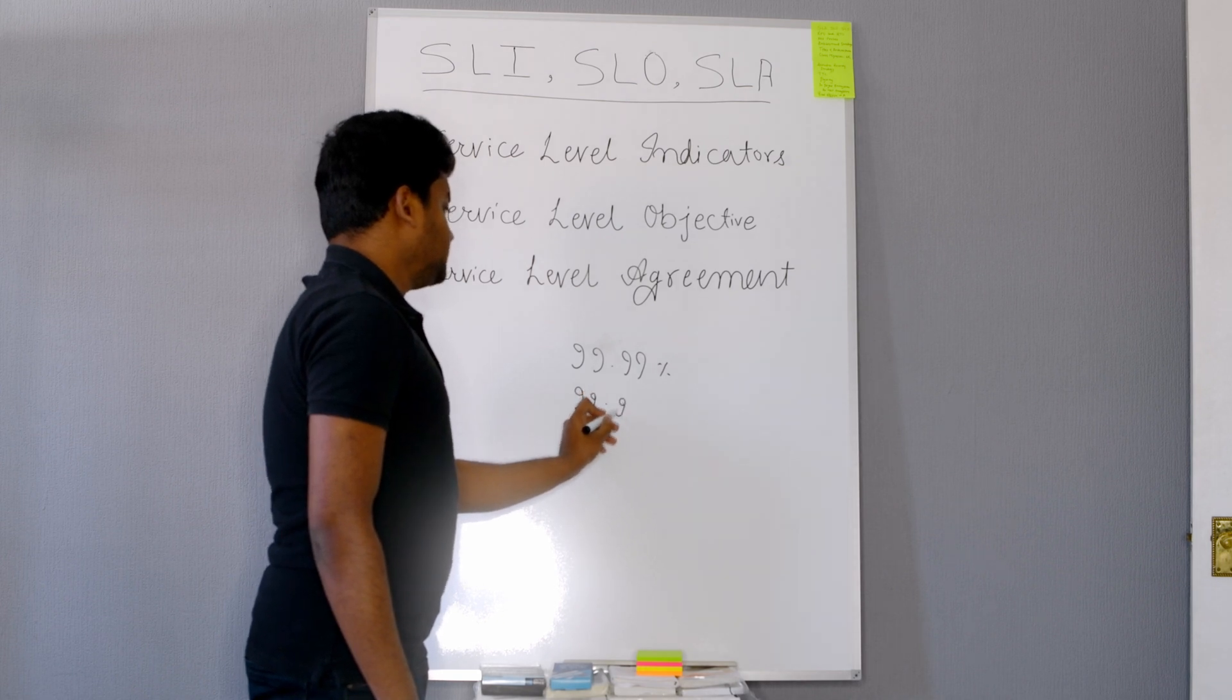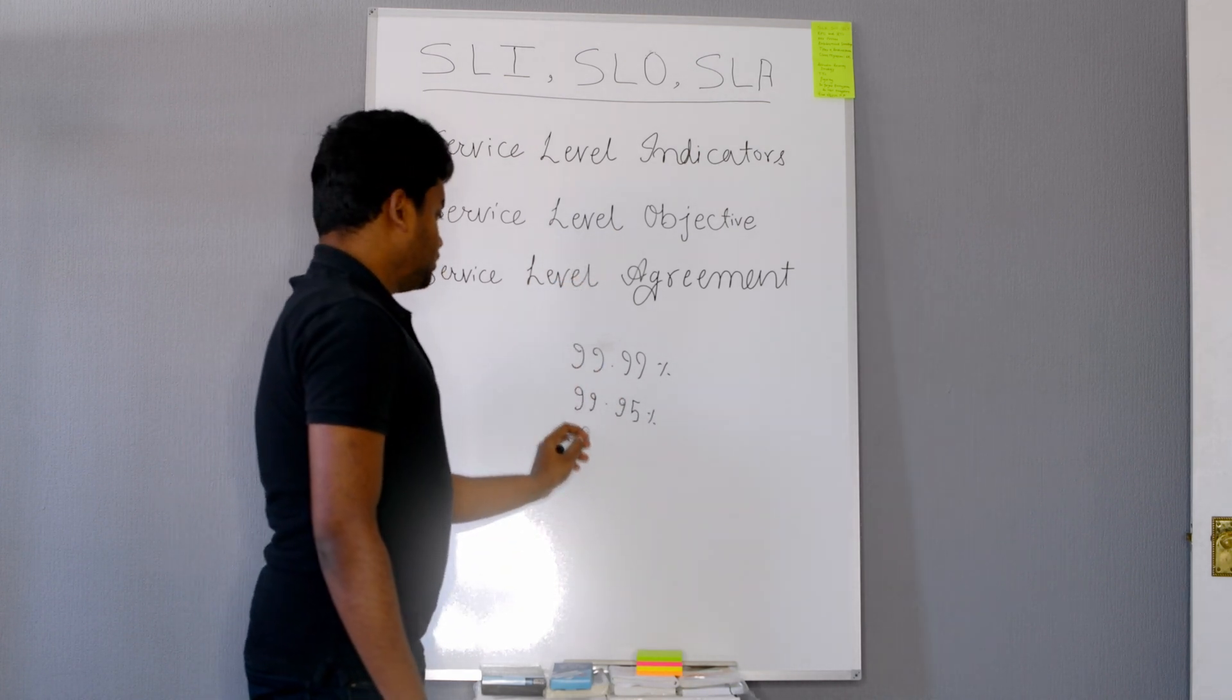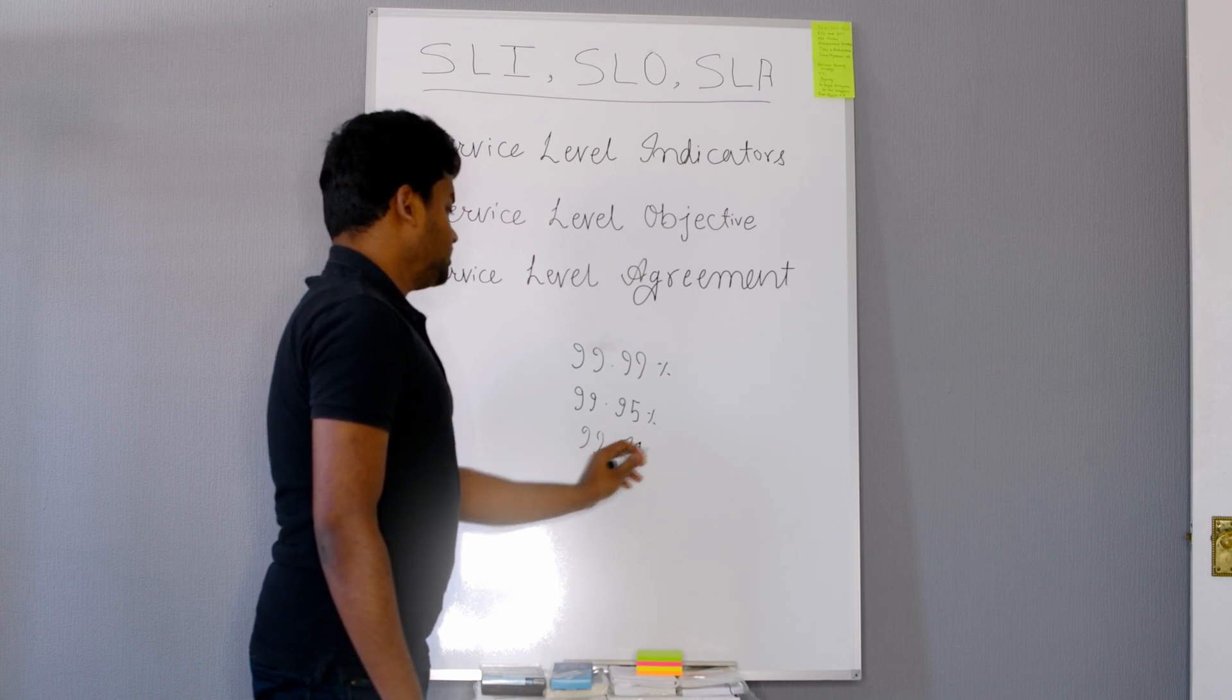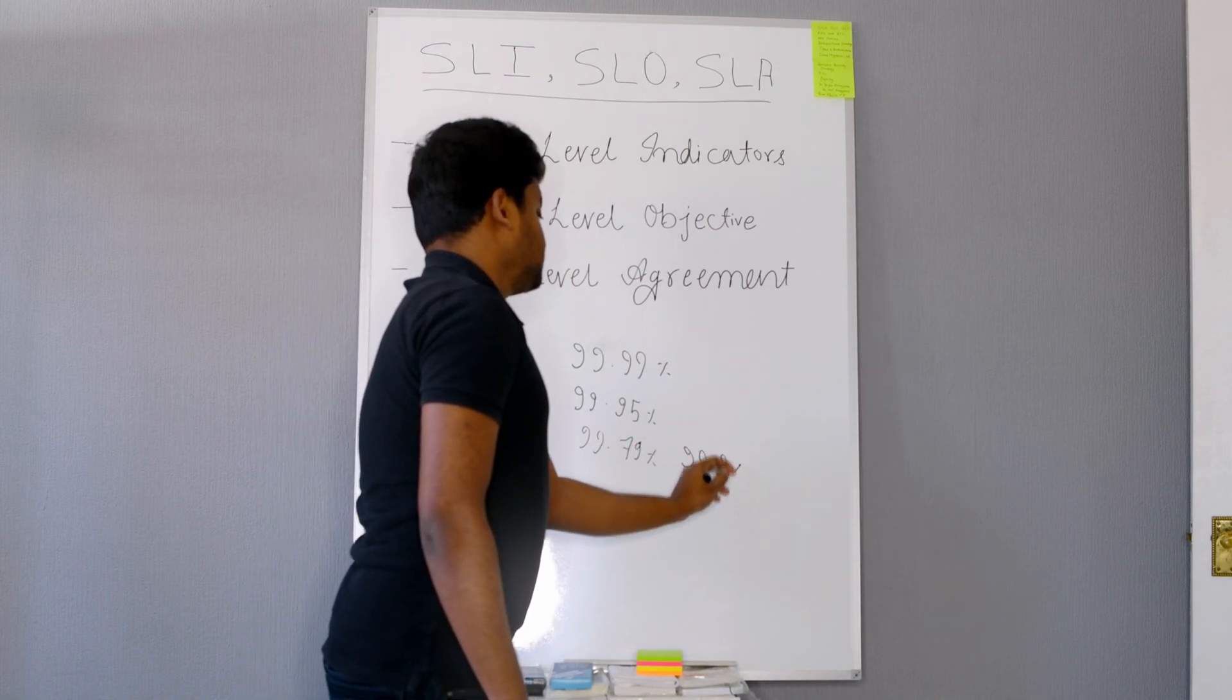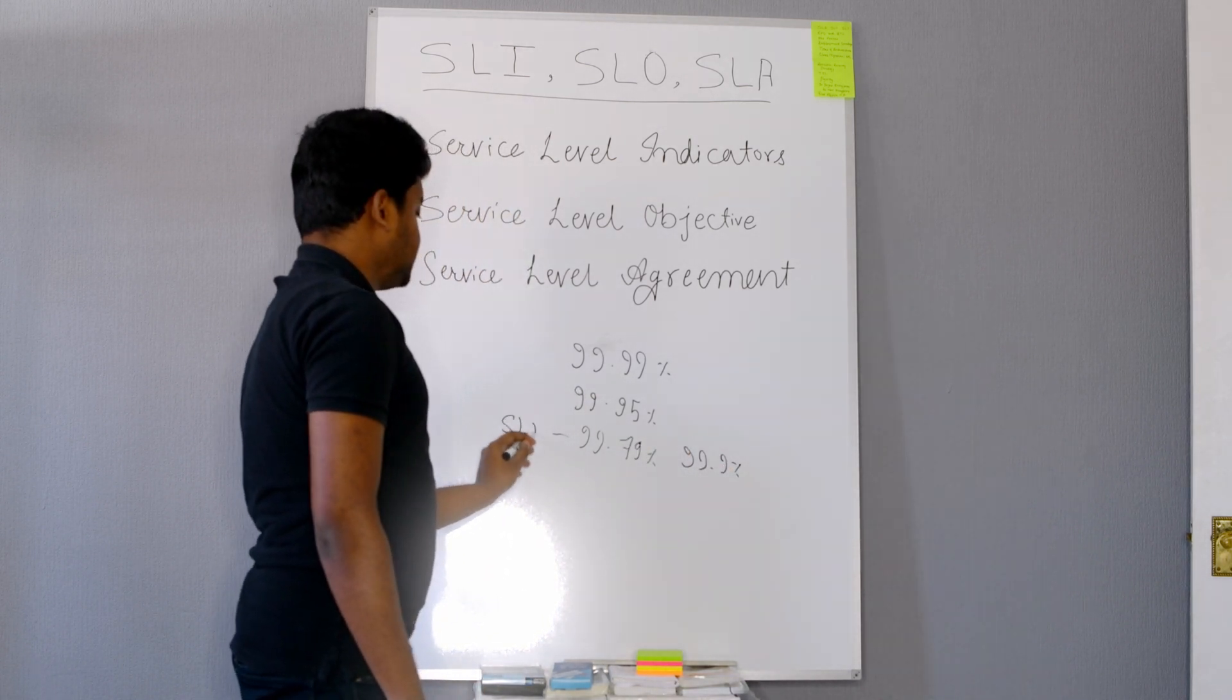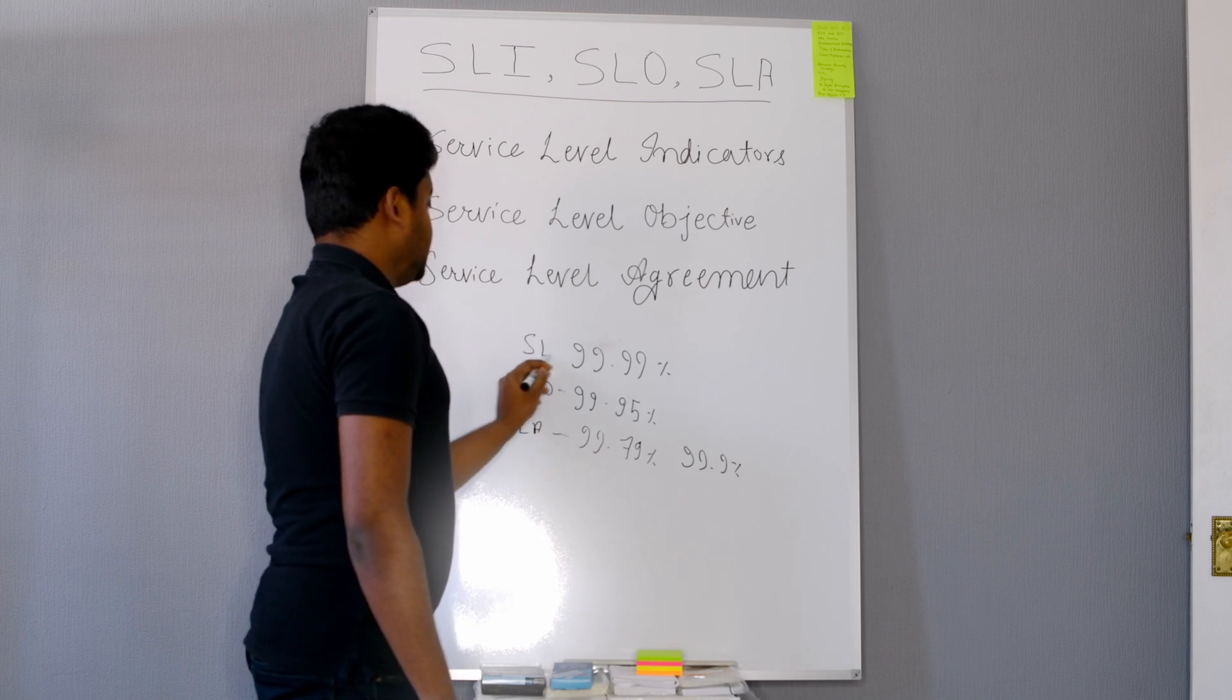But the agreement I'm going to make would be 99.99, you can say 99.79% or 99.39%. This is what agreement I will make with the client. So this will be my SLA, this will be my objective, and this will be my indicators.